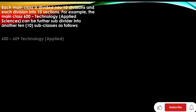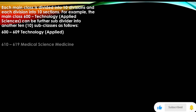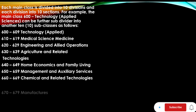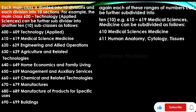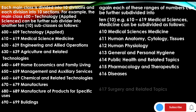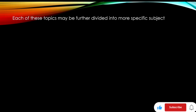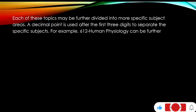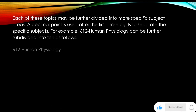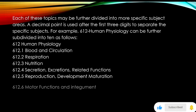For example, main class 600 — Technology Applied Science — can be subdivided into 10 subclasses: 600–609, 610, 620, 630, 640, 650, 660, 670, 680, 690. Each of these ranges can be further subdivided. For instance, 610 can become 611, 612, 613, 614, 615, 616, 617, 618, and 619. A decimal point is used after the first three digits to separate specific subjects — for example, 612 (Human Physiology) can be further subdivided into 612.1, 612.3, and so on.